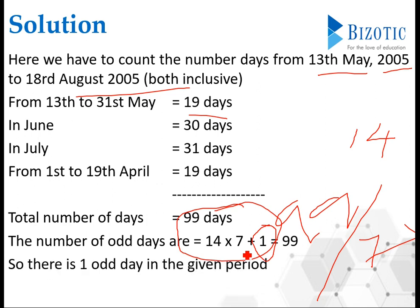99 divided by 7 goes 14 times, so 1 will be the odd day. If there is only one odd day in the given period, that will give you the right answer: option A, 1. I hope this is clear.